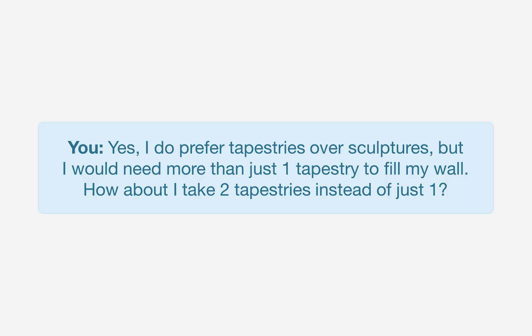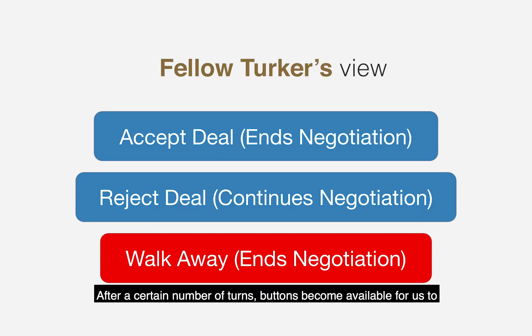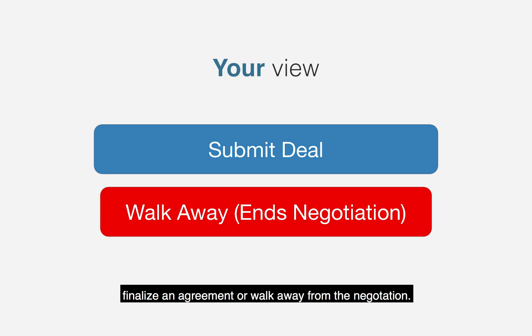Yes, I do prefer tapestries over sculptures. But I would need more than just one tapestry to fill my wall. How about I take two tapestries instead of just one? After this, my partner and I went back and forth for more turns. After a certain number of turns, buttons become available for us to finalize an agreement or walk away from the negotiation.